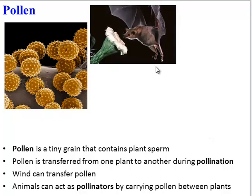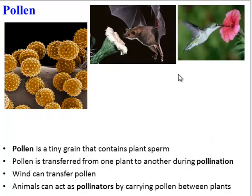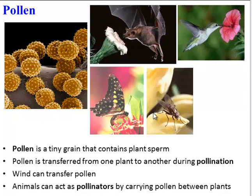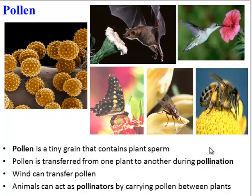Bats are popular pollinators, as are birds and insects — including flies, bees, and butterflies.